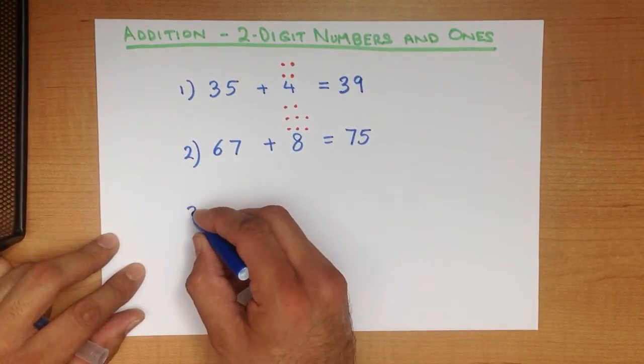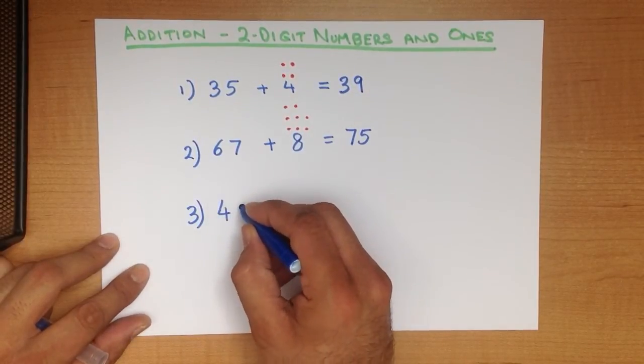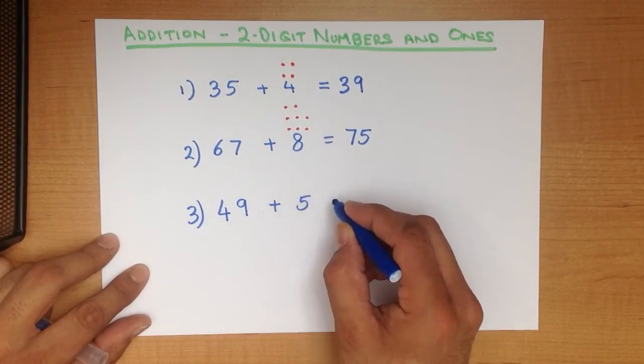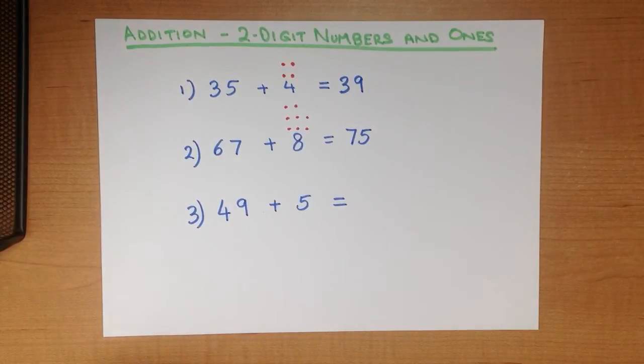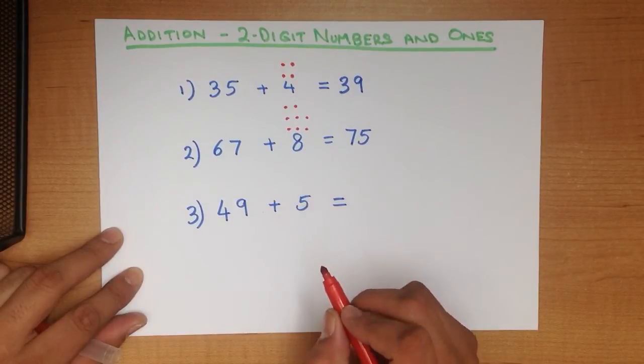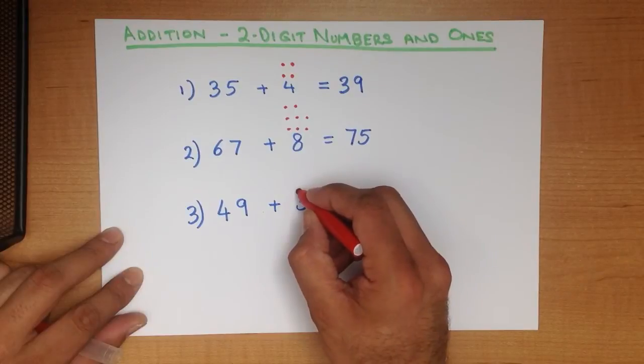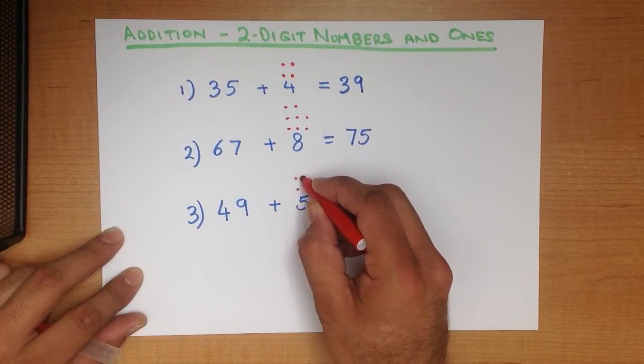Let's work through one final example. What is 49 plus 5? Now you know what to do by now. What we do is above the smaller number we put dots above it. We have to put 5 dots. 1, 2, 3, 4, 5.